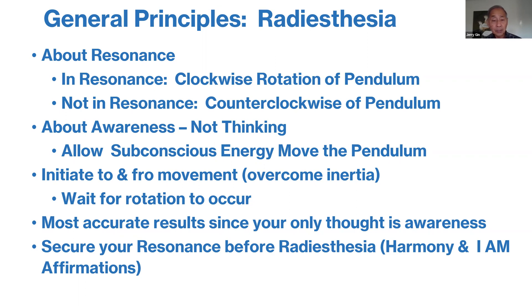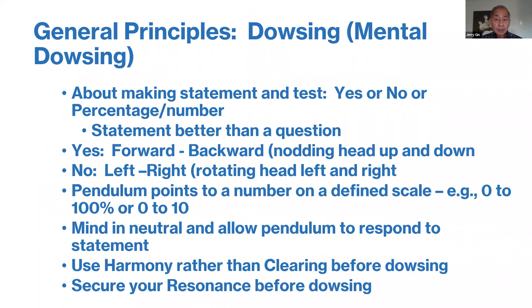In another talk, I'll discuss securing your resonance and how to bring yourself into harmony so that your measurements have the greatest chance of being very accurate, because you're in a vibrational state where you are in tune with the energies around you. Dowsing also works, and some people prefer using it — sometimes it's called mental dowsing. I'll be teaching more of the radiesthesia techniques, as I think it is less prone to mental interferences because you're just in a state of awareness. In mental dowsing, you make a statement or ask a question and get a yes or no answer by the direction of the pendulum's swing.